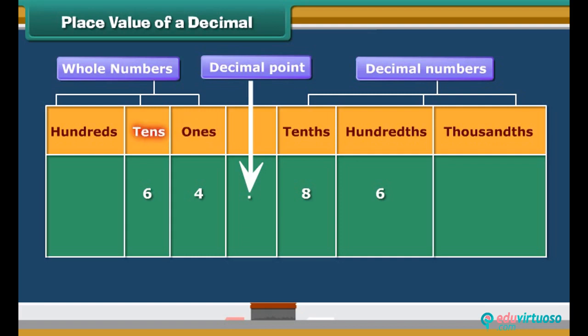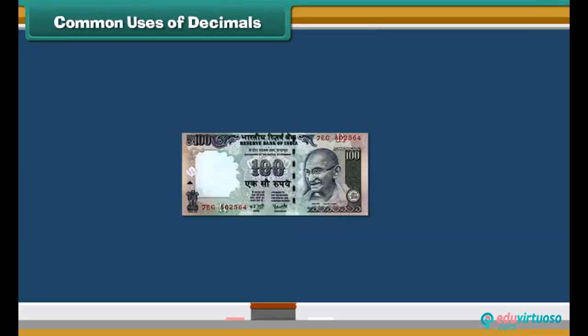Whereas numbers to the left of the decimal point are whole numbers. The place values are ones, tens, hundreds, and so on. Therefore, we read this number as 64 and 86 hundredths.